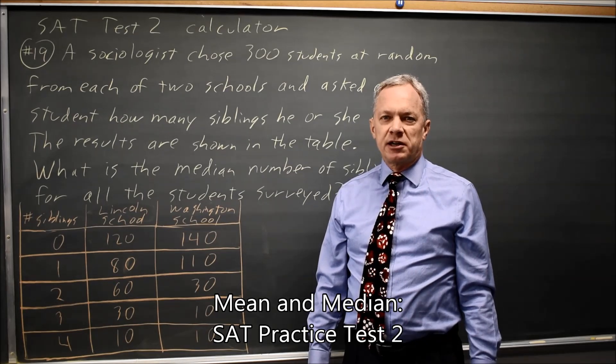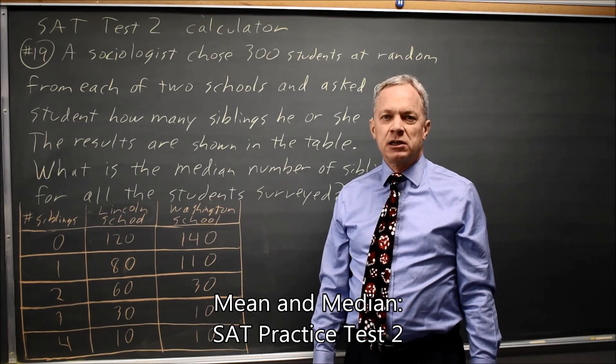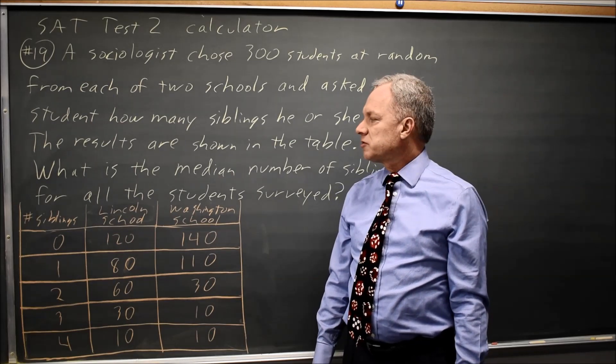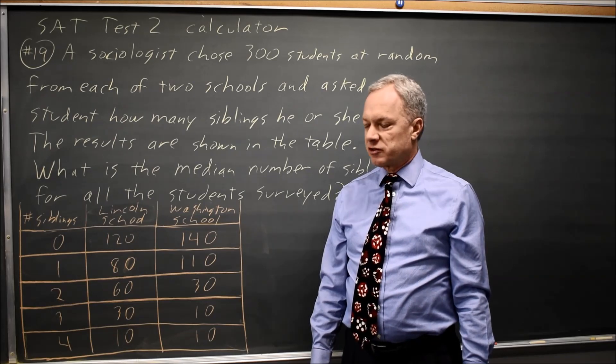This is SAT Test 2, Calculator Section, Question 19. They describe a survey of two schools and ask for the median number of siblings among all the students surveyed.